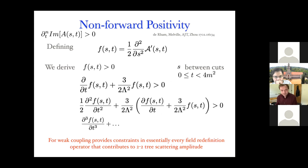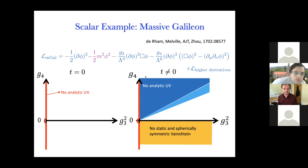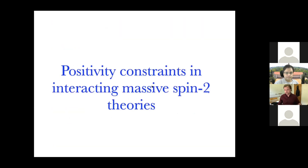A few years ago we generalized this away from the forward limit positivity. For example, we applied it to Galileon theories with a mass, where positivity bounds away from the forward limit strongly constrain but do not immediately rule out those effective theories. We were also able to generalize the positivity bounds straightforwardly to general spin scattering using the transversity formalism, in which the crossing relations are simple.